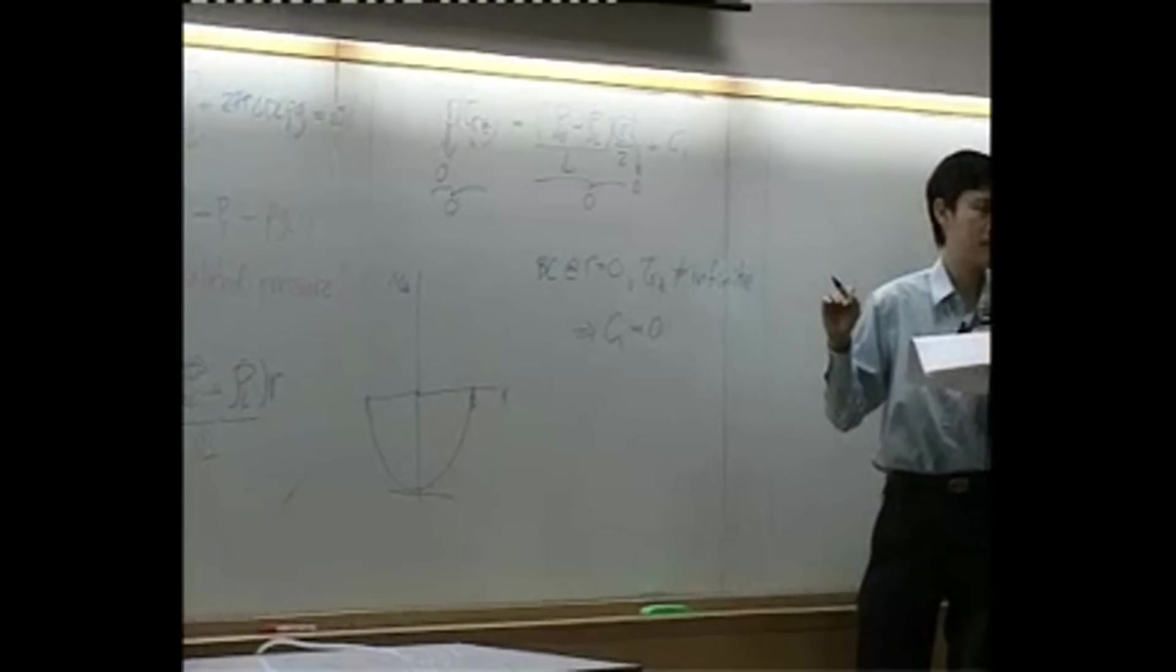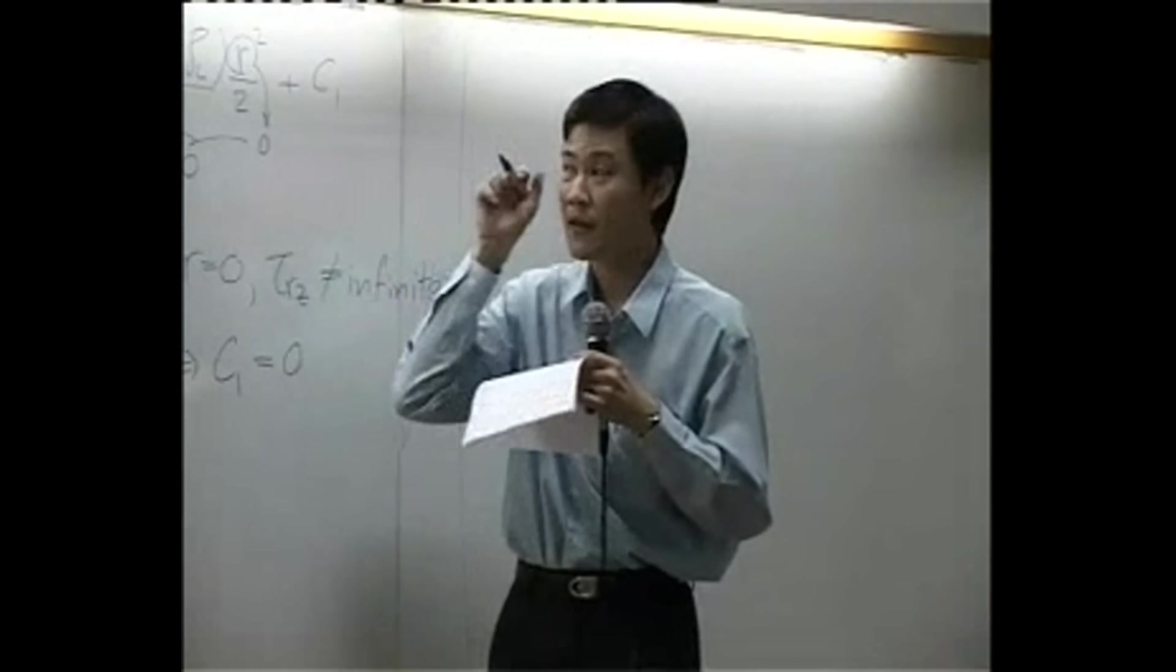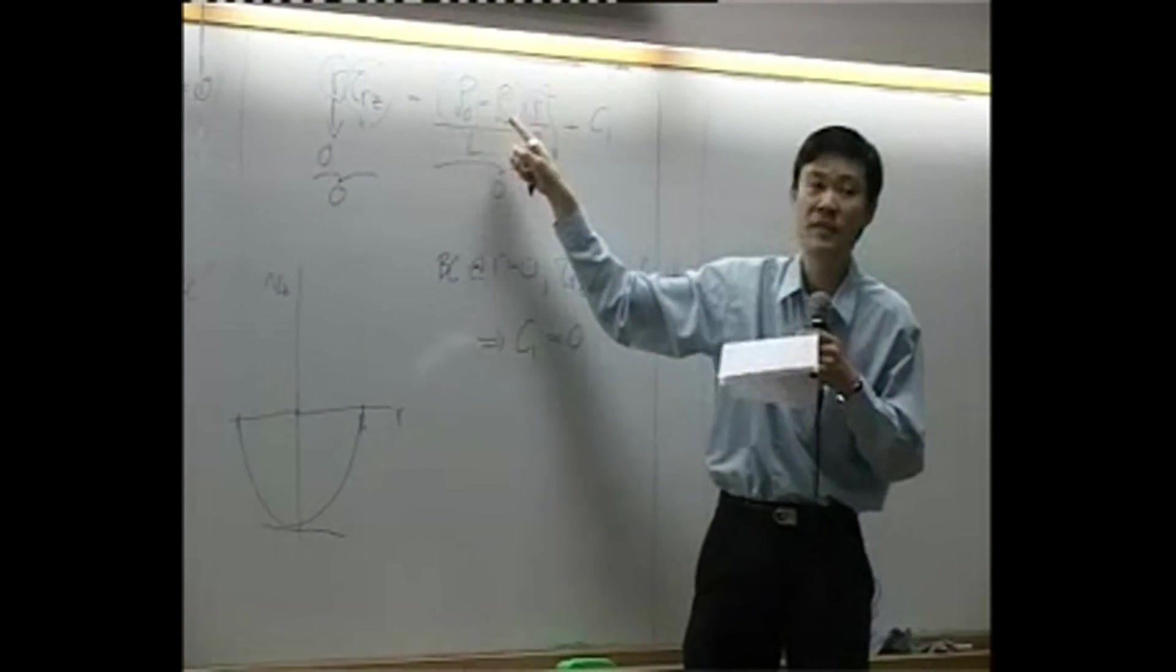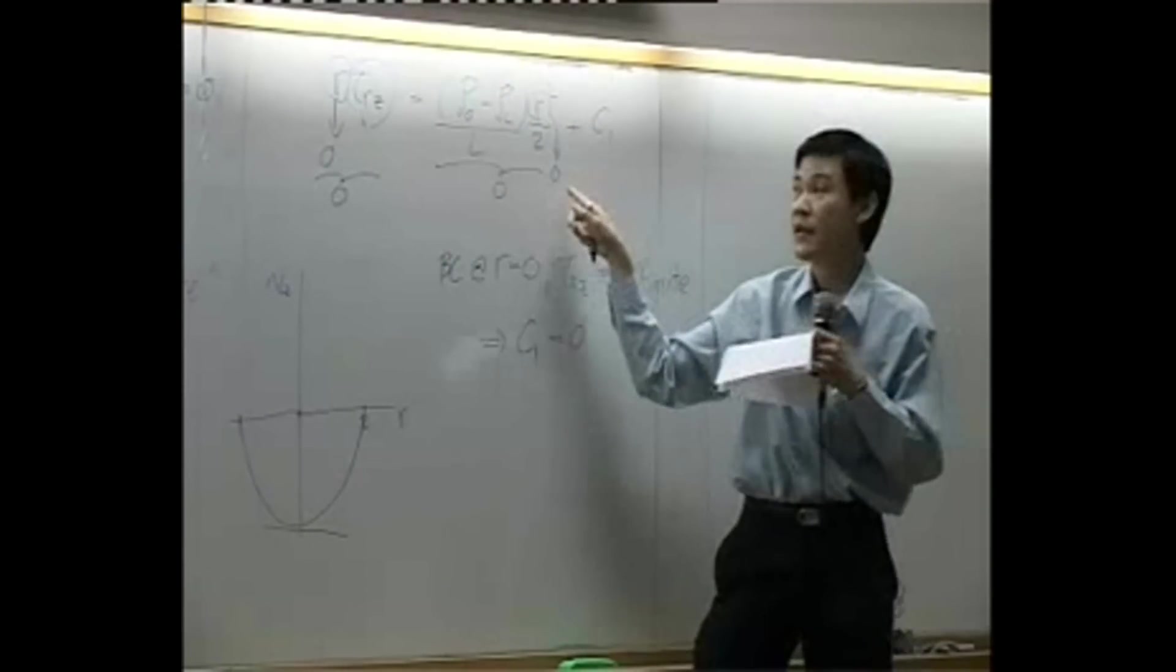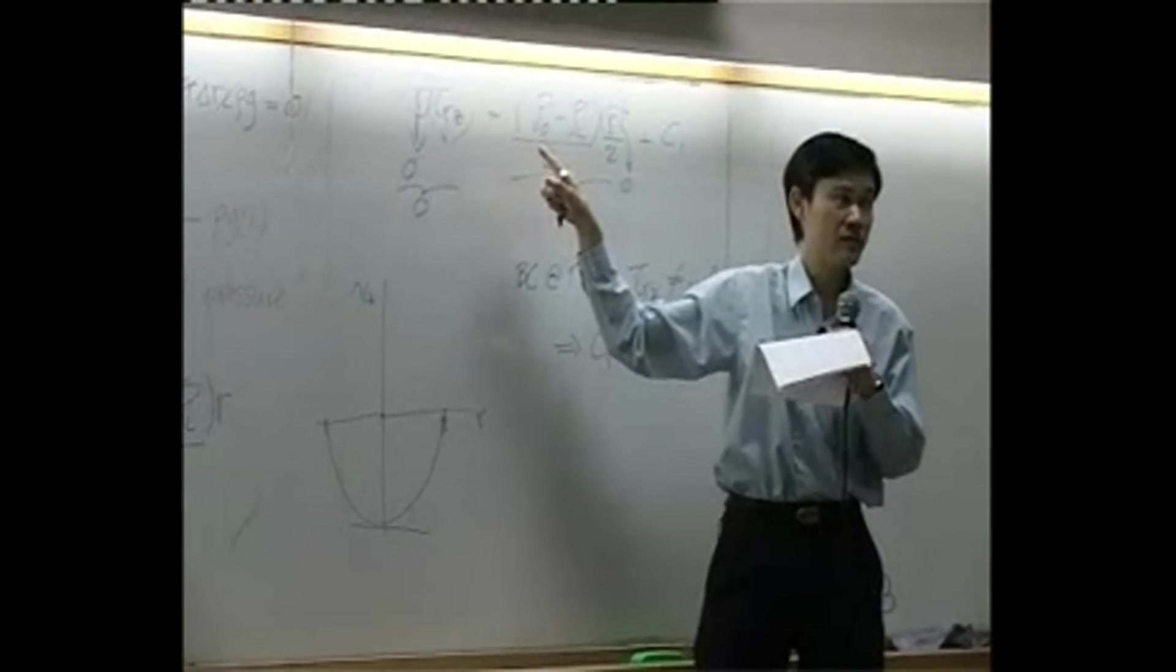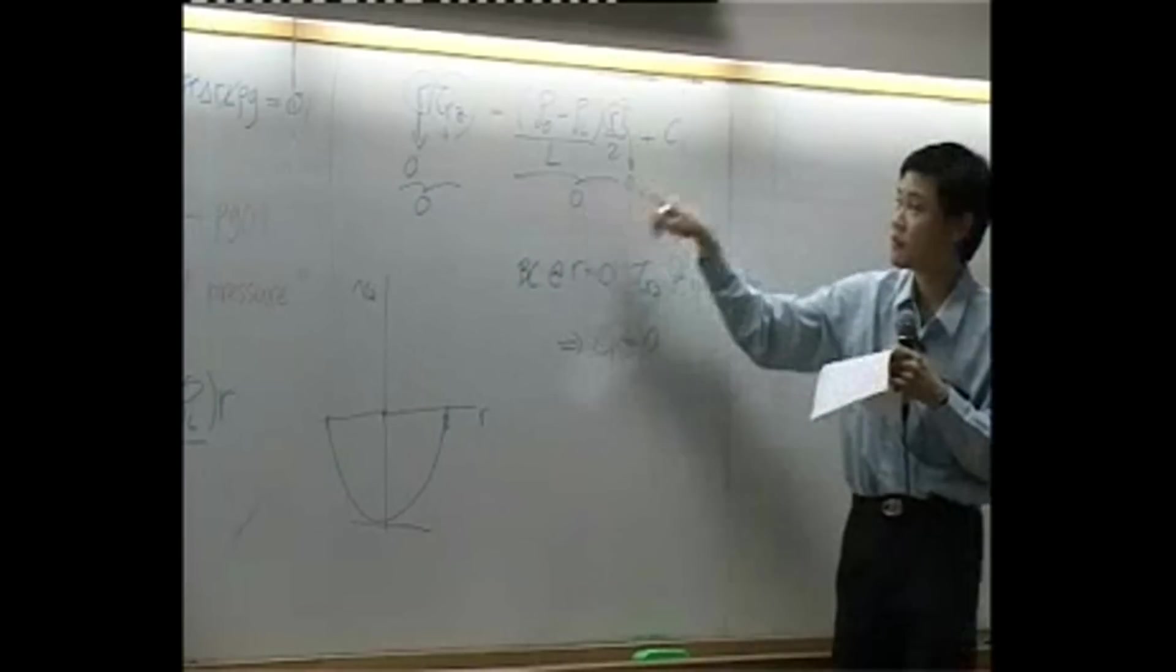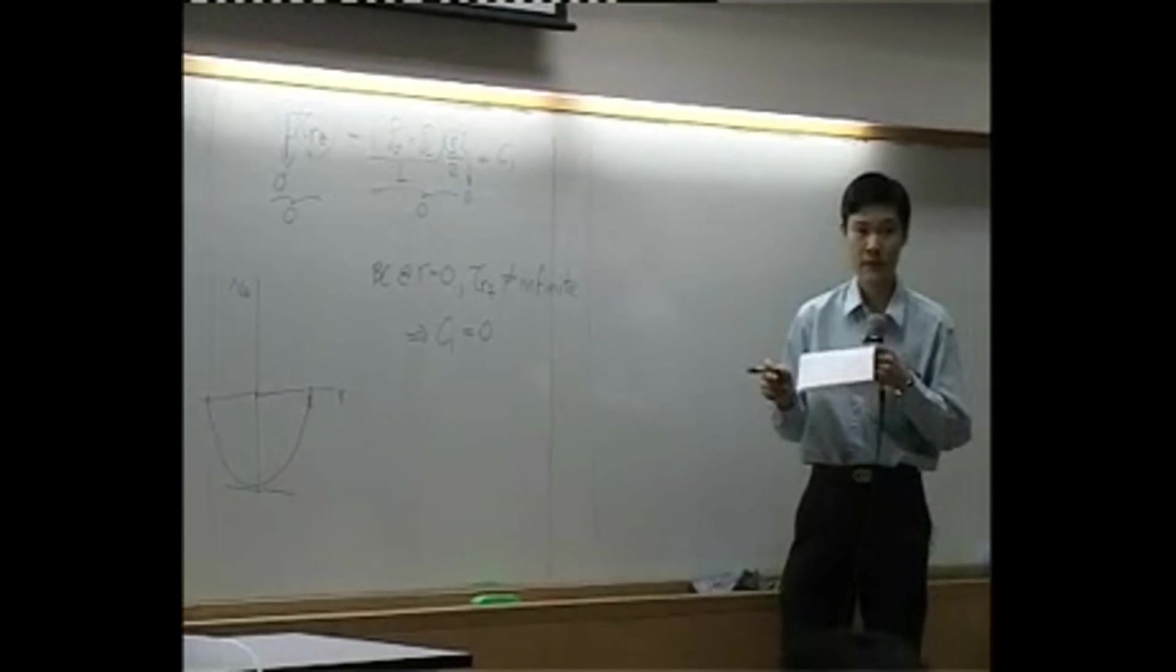This one again. Now if you take r equal to zero, the whole term here becomes zero for sure, because pressure cannot, pressure will be a certain number. Any number multiplied by zero, the whole term becomes zero. Then for this term, r becomes zero, but tau Rz is not infinite. So if it is, it must be a regular number. So regular number multiplied by zero, you get zero. So the first term here is zero, second term is zero, C1 supposed to be zero as well.